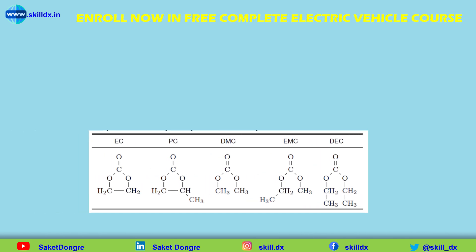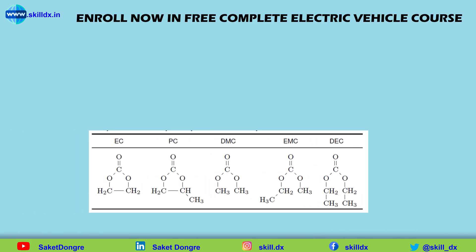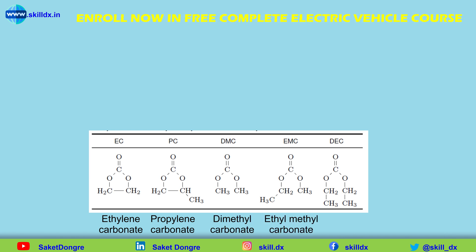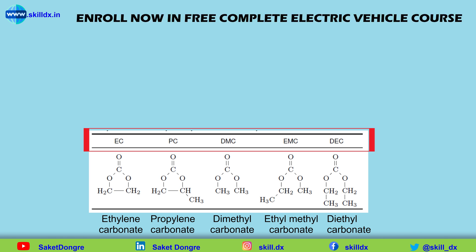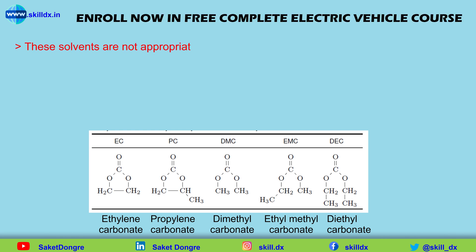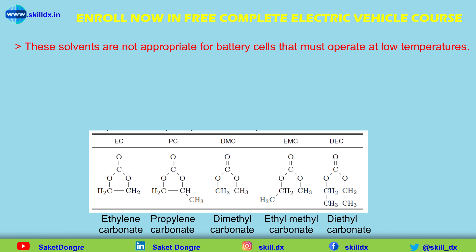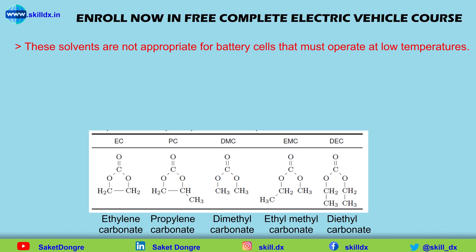The table shows some of the most common solvents used in lithium-ion battery cell electrolytes. These include ethylene carbonate, propylene carbonate, dimethyl carbonate, ethyl-methyl carbonate, and diethyl carbonate, along with their common abbreviations found in the literature. Each solvent has slightly different properties — some become essentially solid at temperatures below 0°C, making them inappropriate for battery cells that must operate at low temperatures.